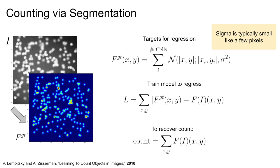Finally, to recover the cell count, we can sum the predicted segmentation map. Because each Gaussian summed to one, the total sum will represent how many Gaussians were predicted.